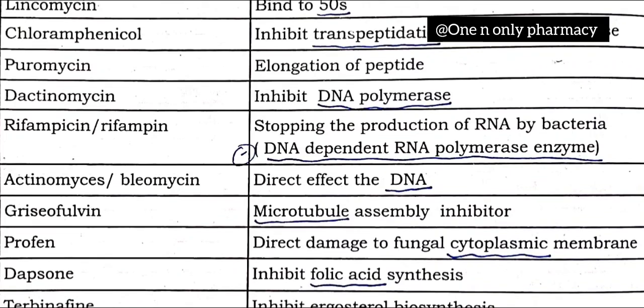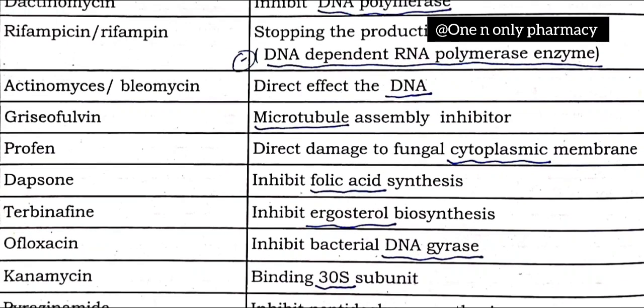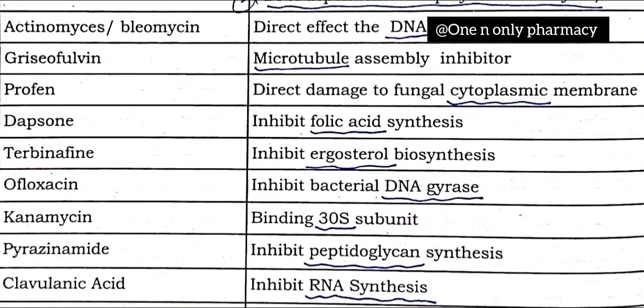Rifampicin (rifampin) inhibits DNA-dependent RNA polymerase, stopping the production of RNA by bacteria. Actinomycin and bleomycin have a direct effect on DNA. Griseofulvin is a microtubule assembly inhibitor.